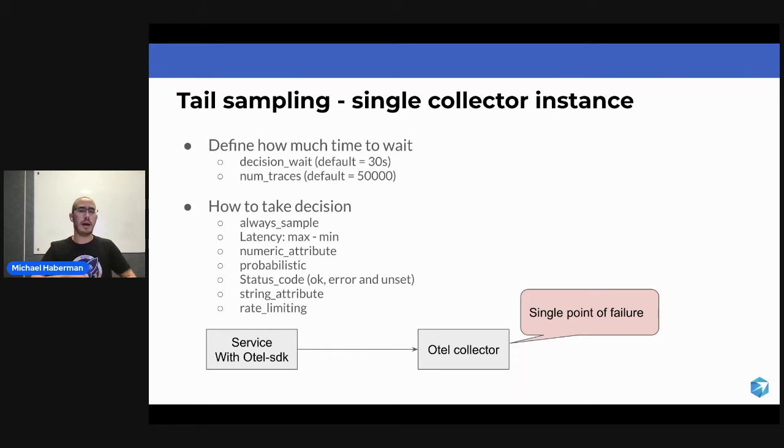This is why we can set a limit to the amount of traces that are going to be collected in a single OpenTelemetry collector instance. In this instance, we have 50,000.